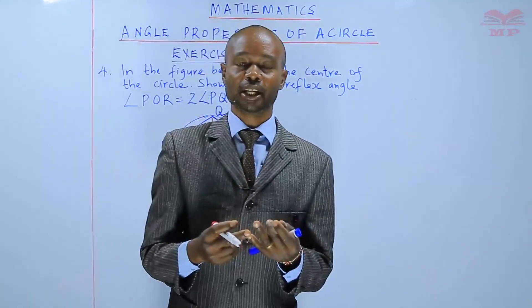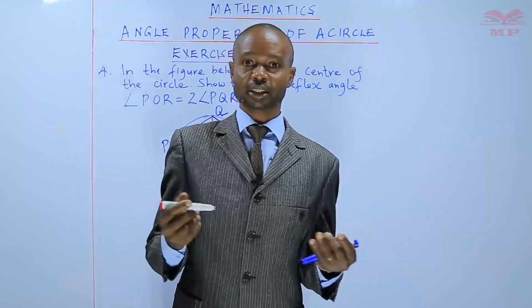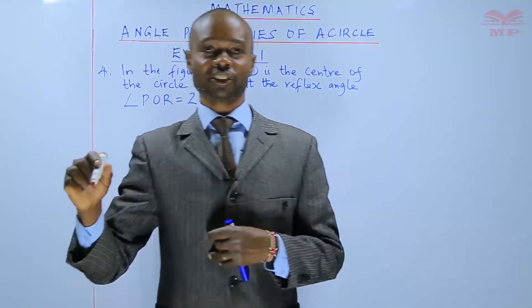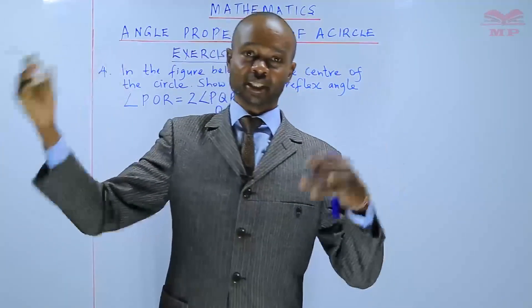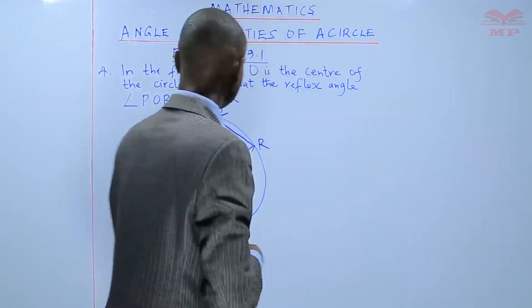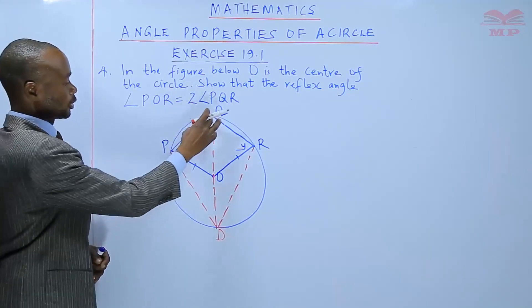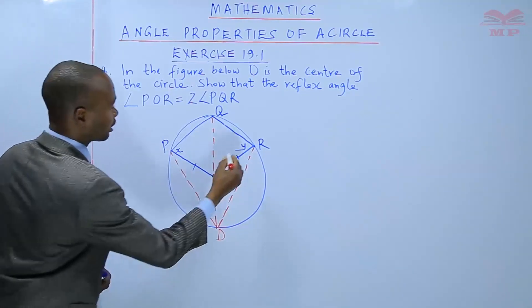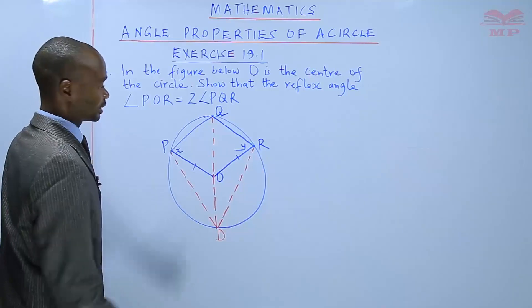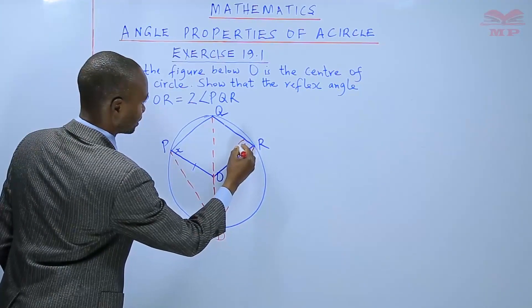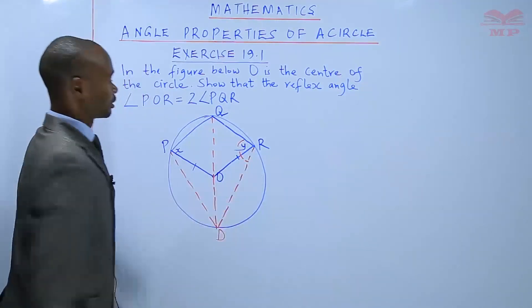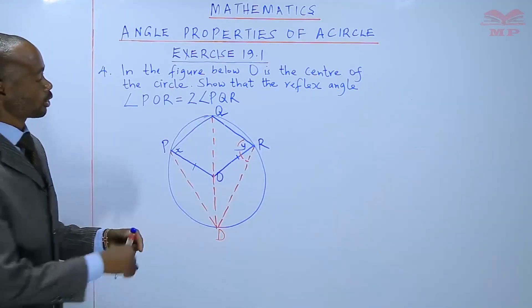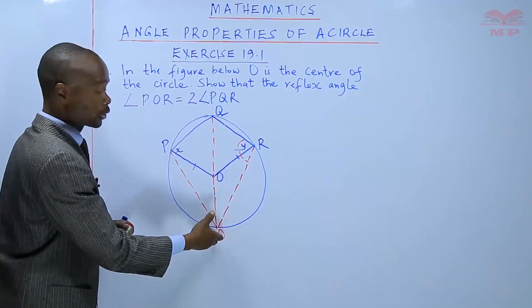There are concepts you should get. In the previous lesson, we learned that if the diameter is a chord, it forms a right angle — it subtends a right angle in each of the segments. So using chord QD, which is the diameter, angle QRD is a right angle because it is subtended by chord QD, which is the diameter.